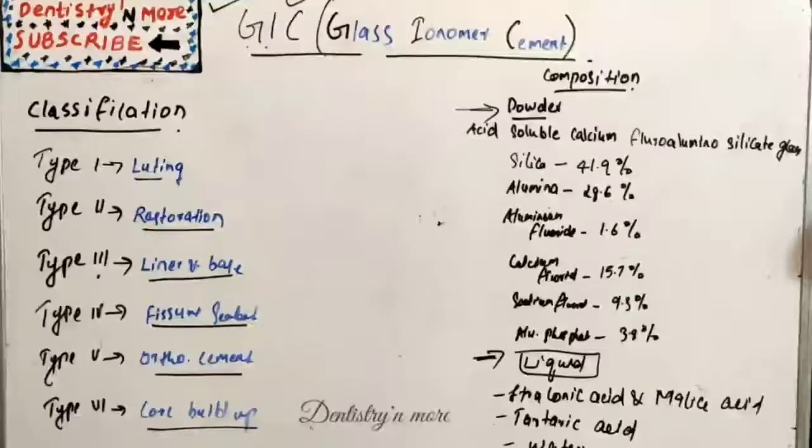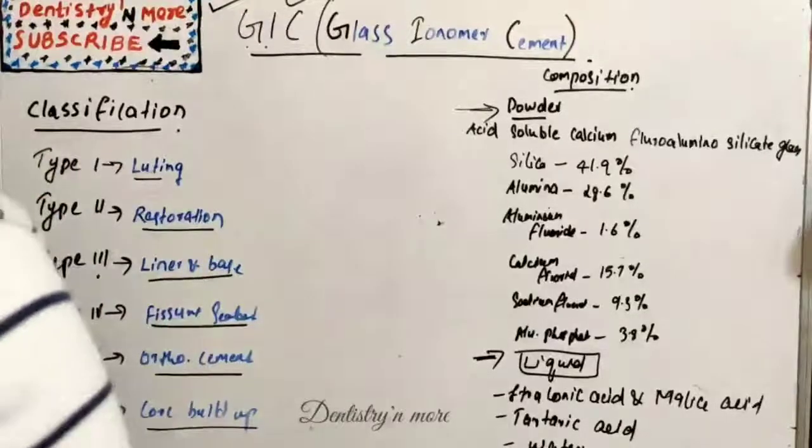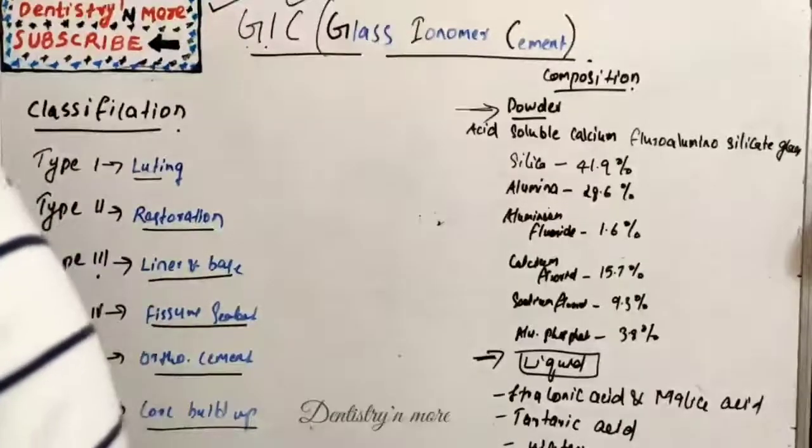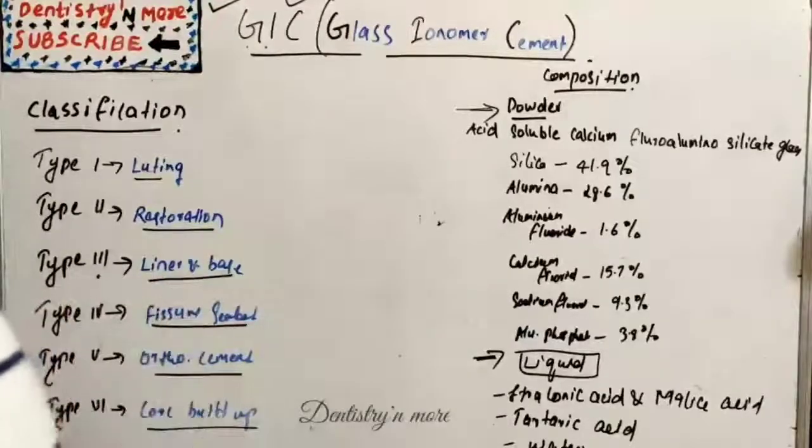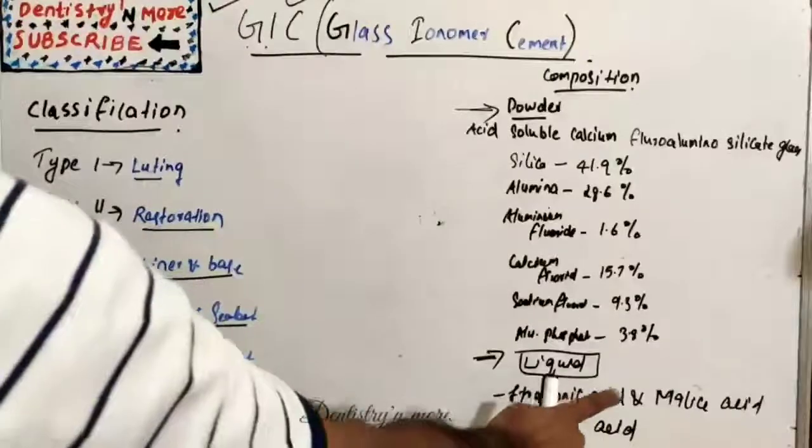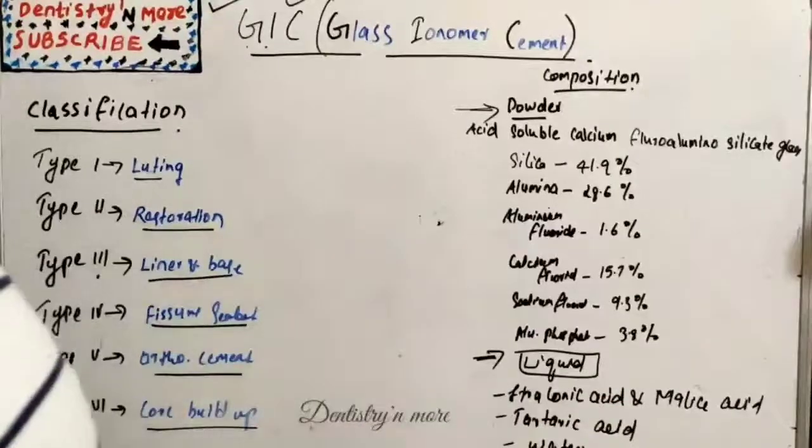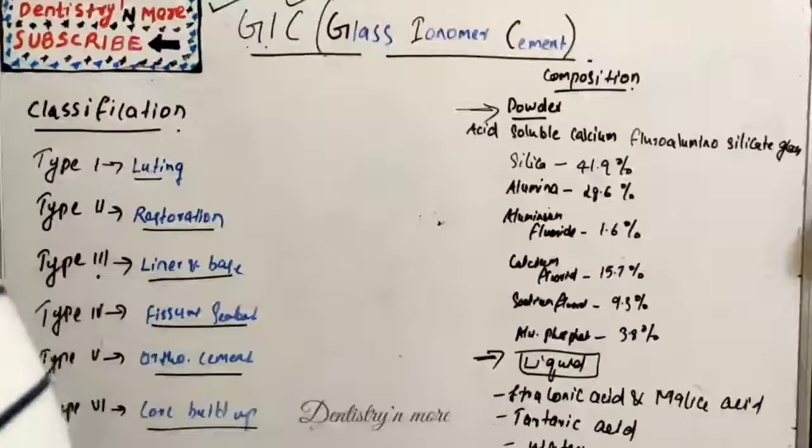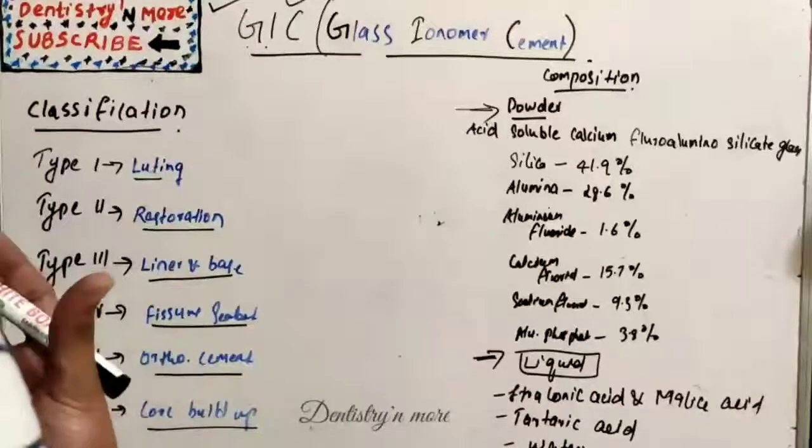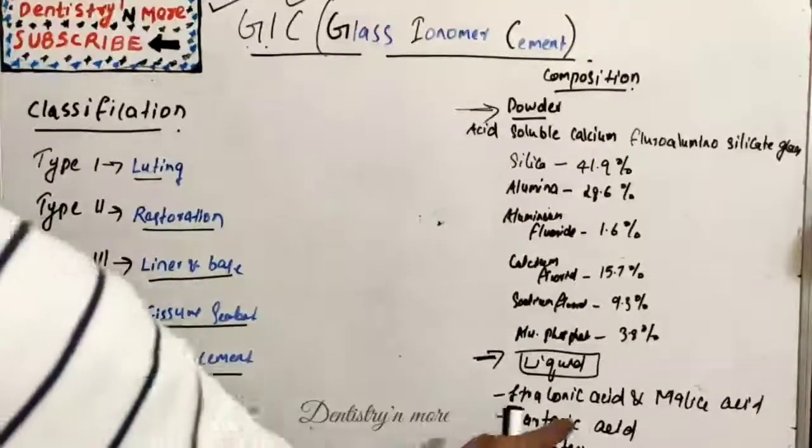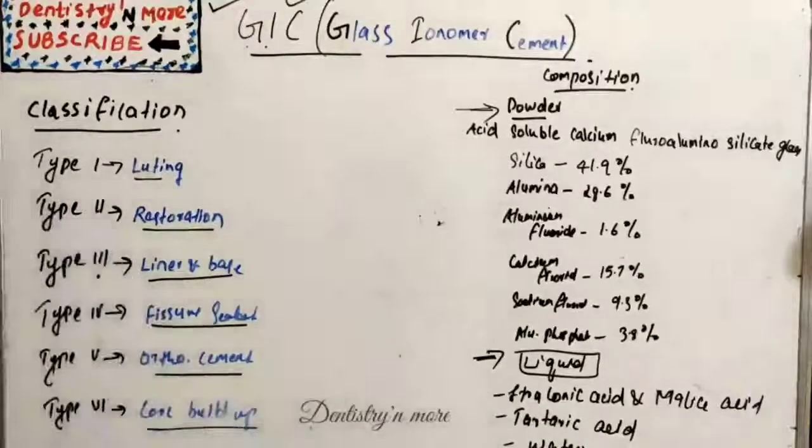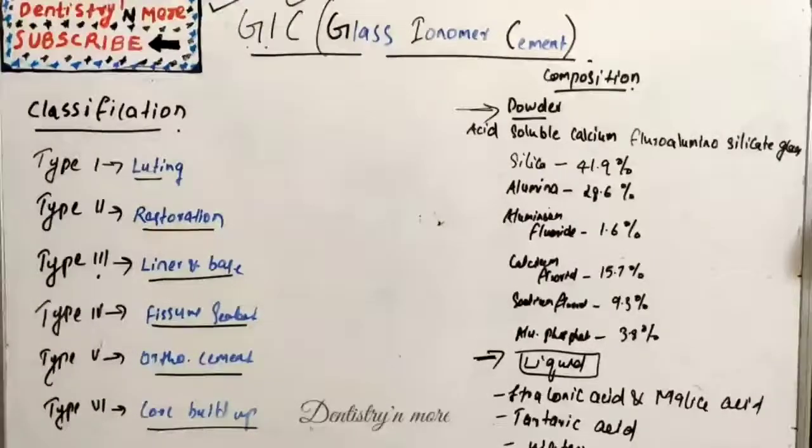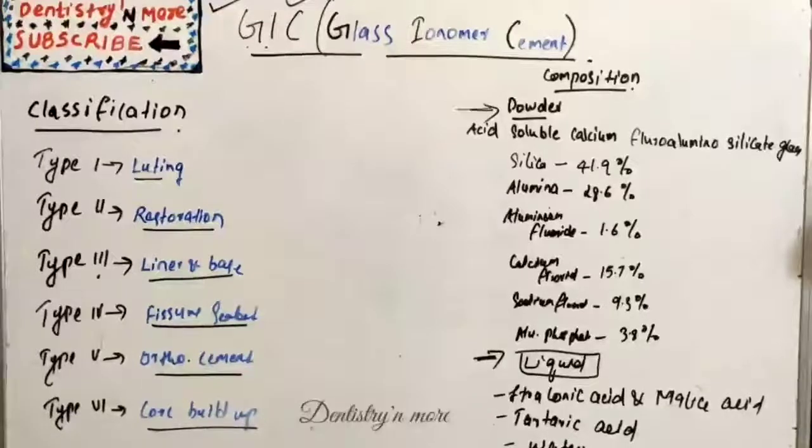This fluoride portion acts as a ceramic flux, and strontium, barium, or zinc oxide provide radiopacity. Whereas the liquid consists of polyacrylic acid in the form of copolymer with itaconic acid and maleic acid, and also we have tartaric acid which improves handling characteristics and increases working time, and water which is a medium of reaction and hydrates the reaction products.